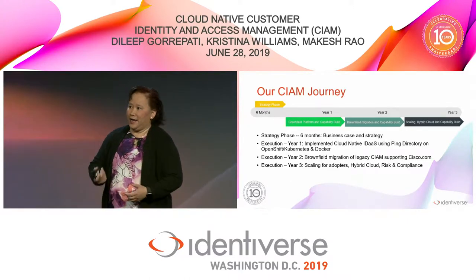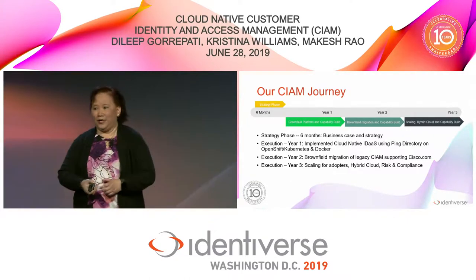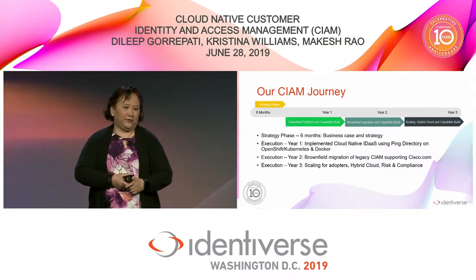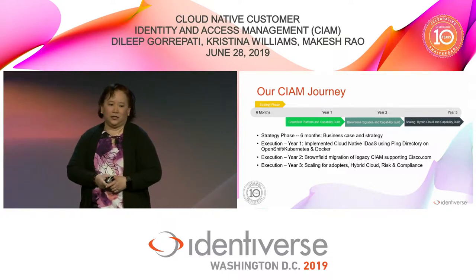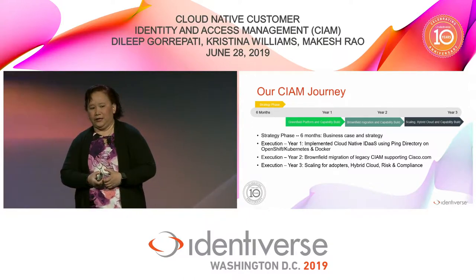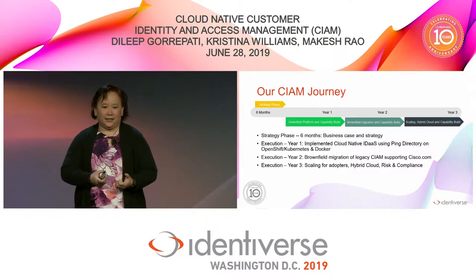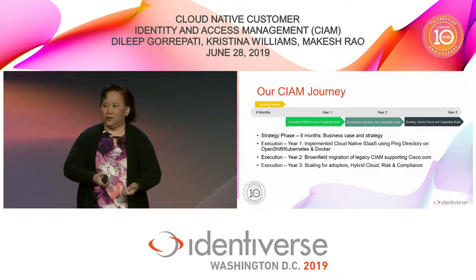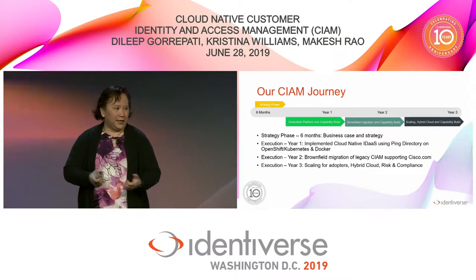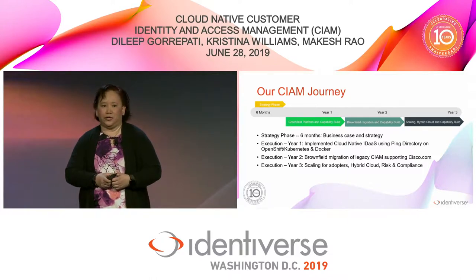Our CIAM journey started about three and a half years ago. We started with a six-month strategy phase where we defined our business case and strategy. The first year was around implementing a cloud-native identity as a service. We used Ping Directory as our underlying store — it was originally Unboundid, but then it was acquired by Ping. We implemented it all containerized, completely cloud-native, with all the rest of the components being open source.